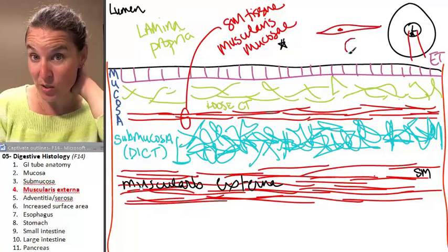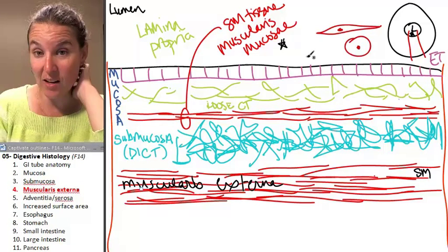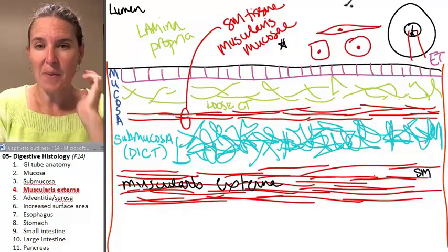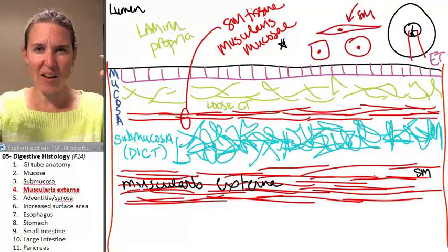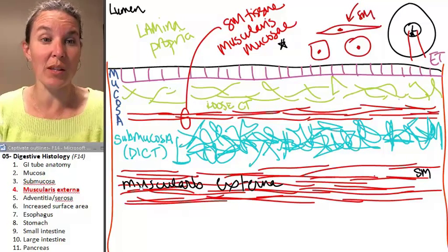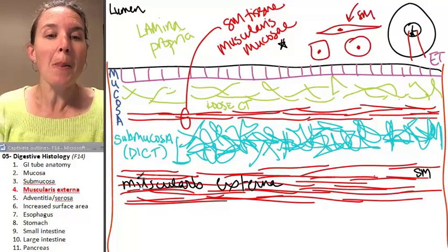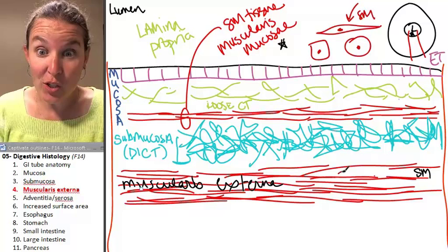They've got their little, as opposed to like a circular cell or even a cuboidal cell, a smooth muscle cell kind of has a long, I can't remember the word they use to describe that shape.